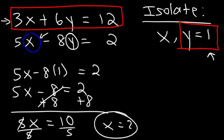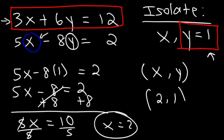Now that we have x and y, we have our final answer. We can write it as an ordered pair: 2 comma 1. x is equal to 2 and y is equal to 1. And that's how you solve a linear system by substitution.